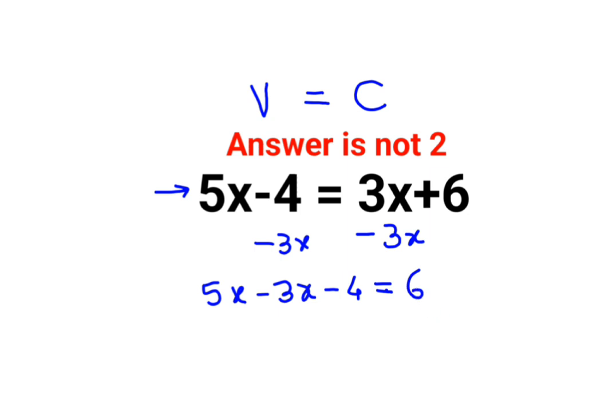We'll add 4 to both sides. 5x - 3x on the left-hand side becomes 2x, and 6 + 4 gives you 10. To find the value of x, divide both sides by 2. Therefore, x equals 5.